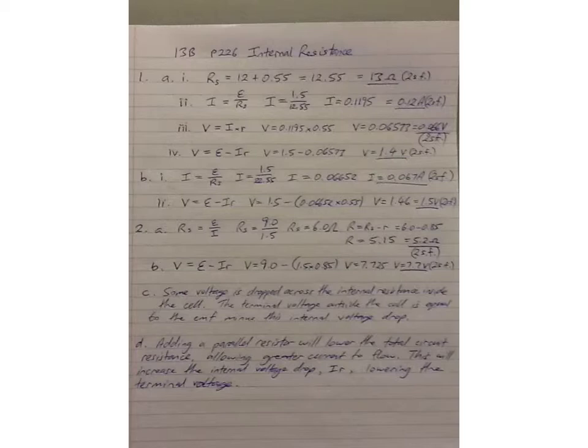So B part 1. Calculate the current in the circuit. Again, you use the voltage divided by resistance idea. It's the EMF, in this case, divided by the total series resistance. In this case, 22.55. And your current turns out to be smaller than before, of course. Rounded to two figures, 0.067 amps.